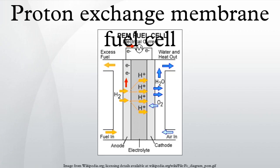A proton exchange membrane fuel cell transforms the chemical energy liberated during the electrochemical reaction of hydrogen and oxygen to electrical energy, as opposed to the direct combustion of hydrogen and oxygen gases to produce thermal energy. A stream of hydrogen is delivered to the anode side of the membrane electrode assembly. At the anode side it is catalytically split into protons and electrons.